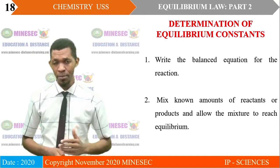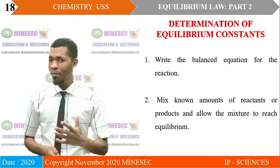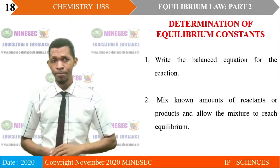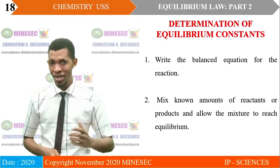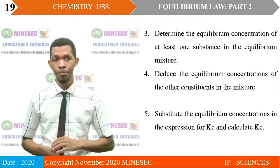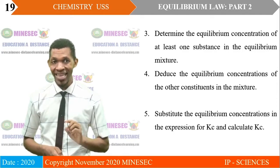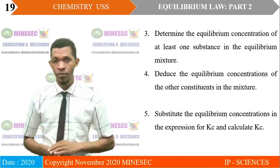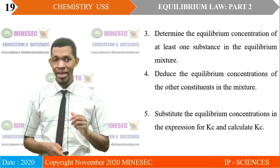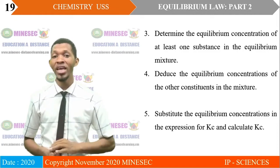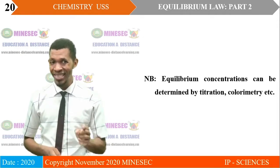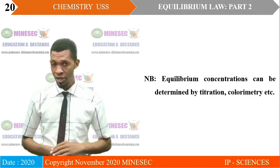Determination of equilibrium constant. The equilibrium constants of chemical reactions are determined following these steps: (1) Write a balanced equation for the reaction. (2) Mix known amounts of reactants or products and allow the mixture to reach equilibrium. (3) Determine the equilibrium concentrations of at least one substance. (4) Deduce the equilibrium concentrations of the other constituents. (5) Substitute the equilibrium concentrations in the expression for Kc and calculate Kc. Equilibrium concentrations can be determined by titration, colorimetry, and many other methods.